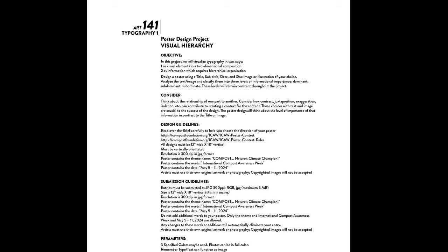For our poster project, we're going to be dealing with visual hierarchy. The objective is to visualize typography in two ways: one as visual elements in a two-dimensional composition, and two as information requiring hierarchical organization. We will use a title, a subtitle, and one image or illustration of your choice. Each student must create their own original illustration — you can collage found imagery, but it must be made your own to constitute an original illustration. We will classify text and image into three levels: dominant, subdominant, and subordinate — and these levels will remain constant throughout the project.